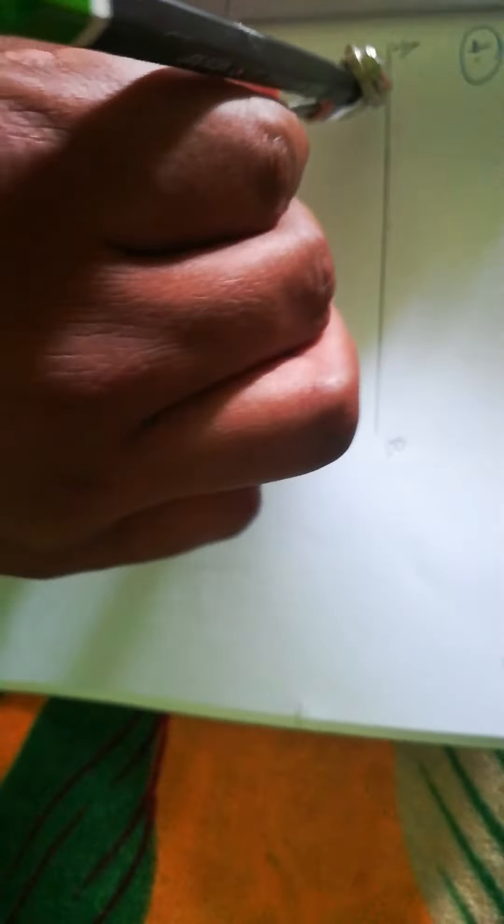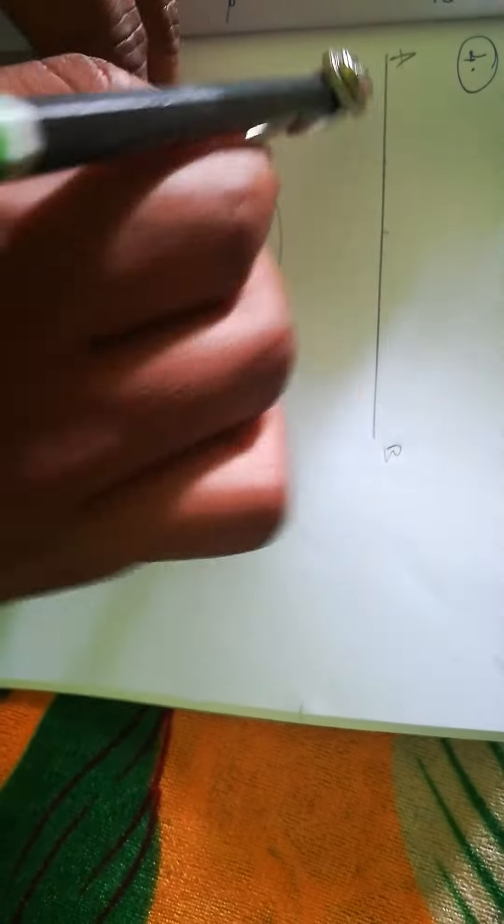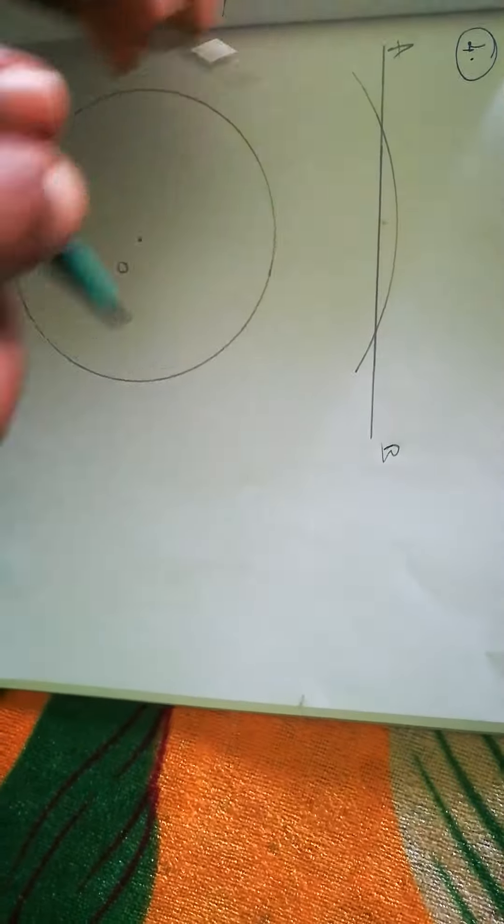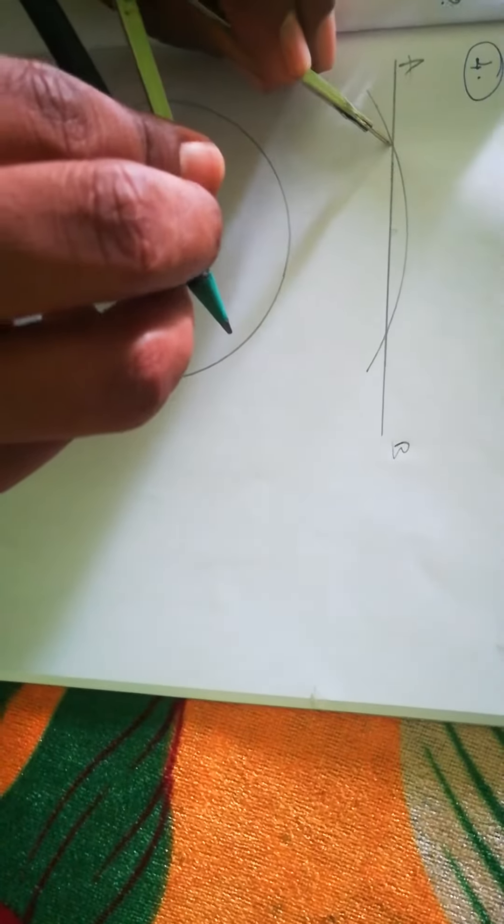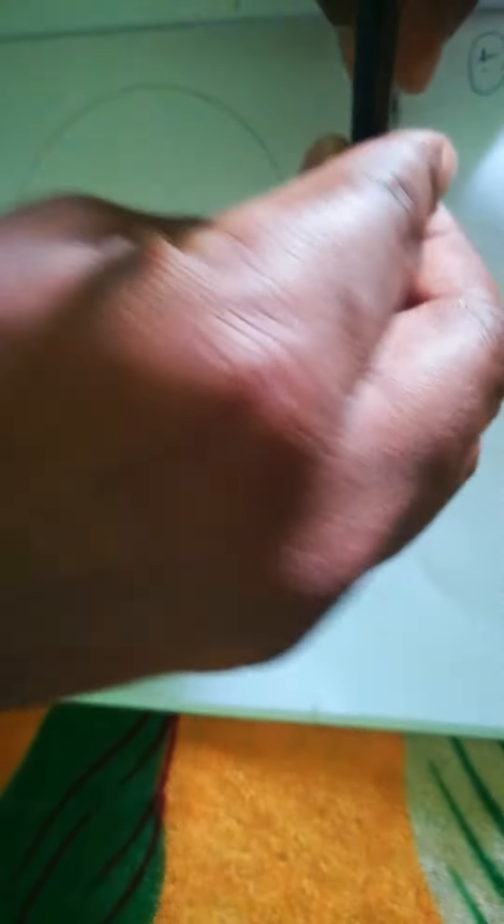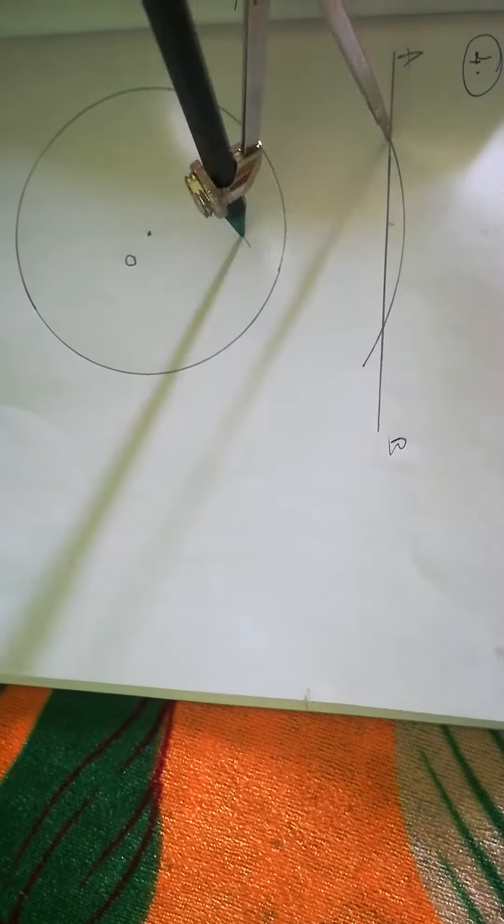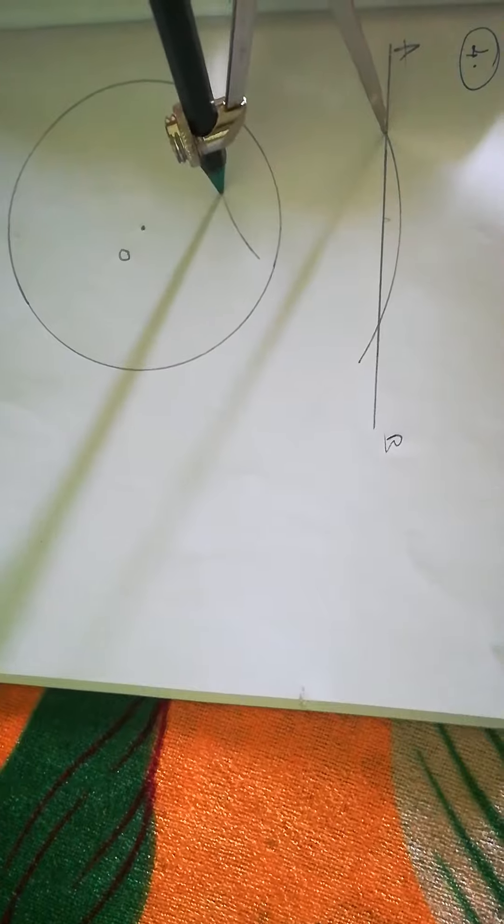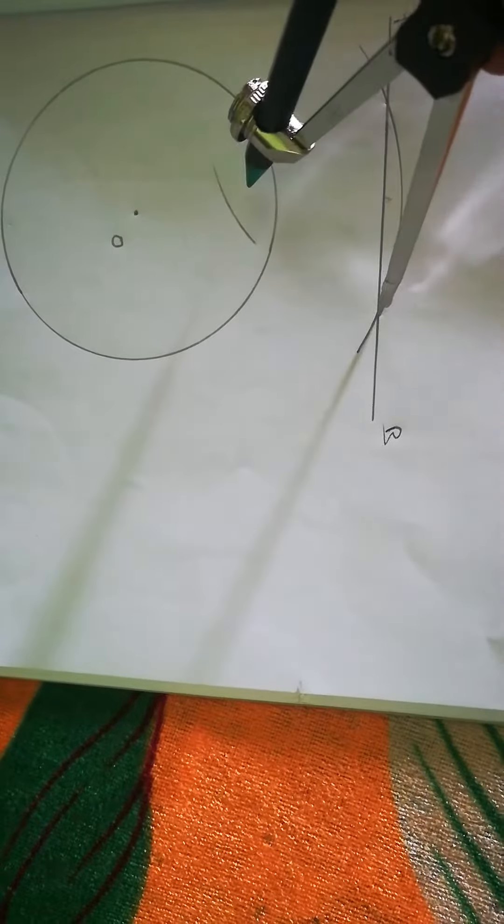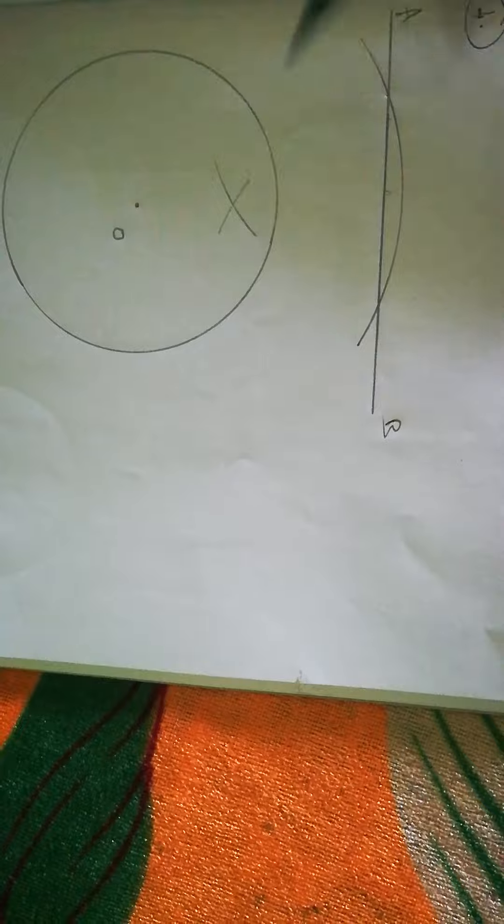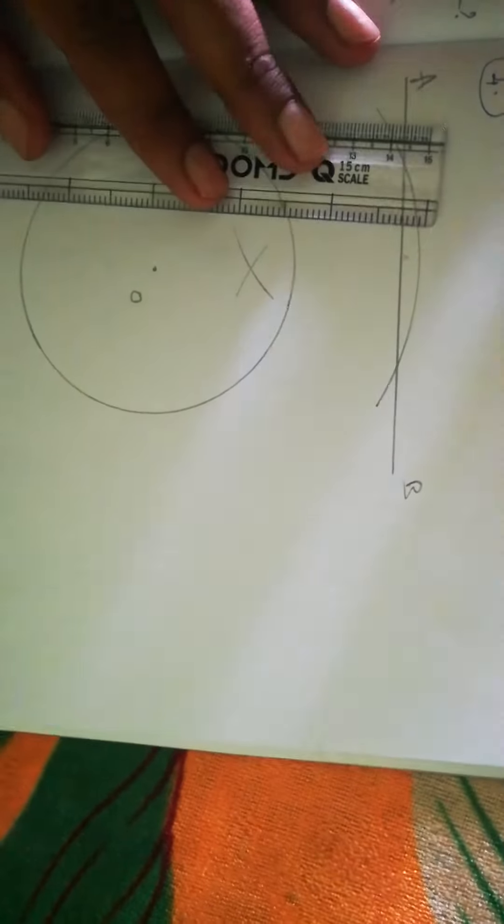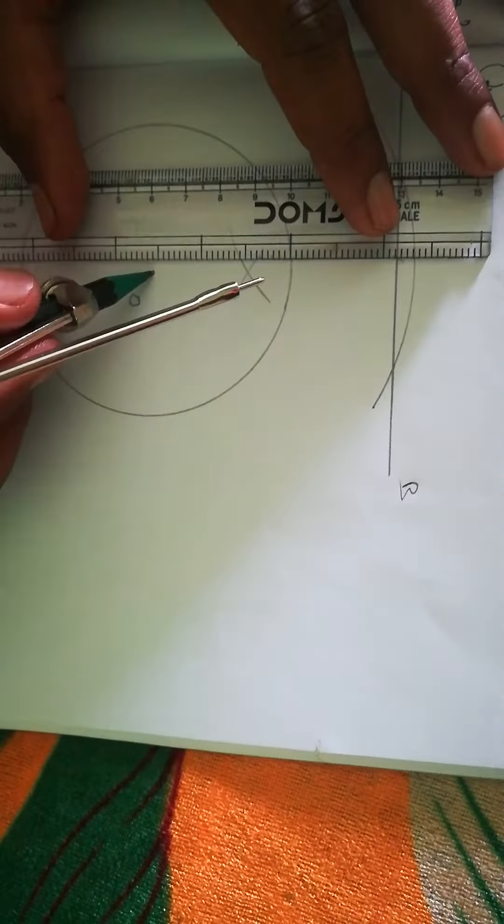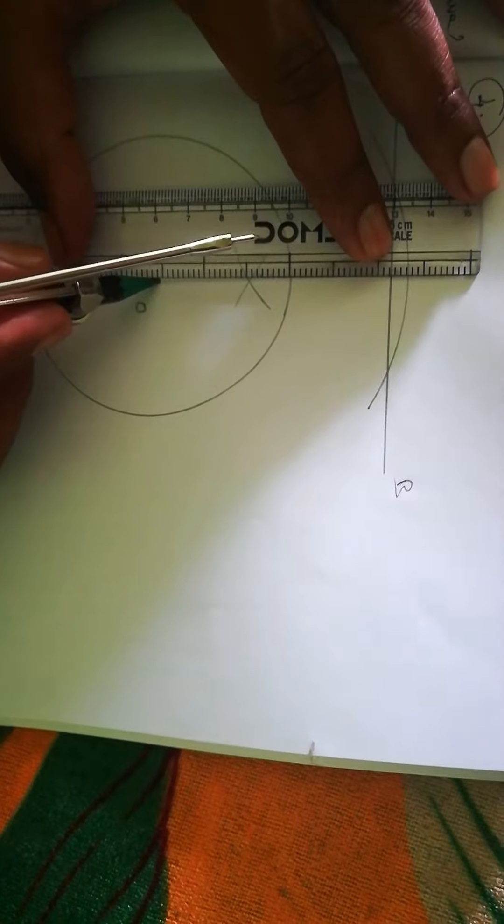From here, the point, we take more than half and cut it. And from here again cut it and join these two from the point O and the cutting arc. Join to that line.